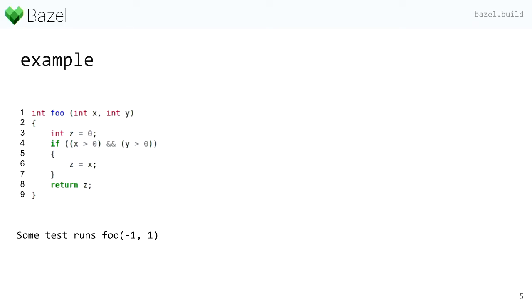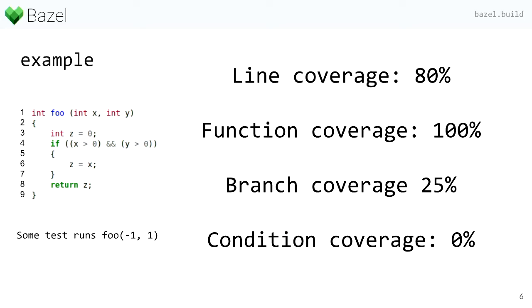If we consider this very simple C++ example, and we assume that somewhere we have a test that runs the method foo with parameters minus 1 and 1, then let's see what coverage will tell us. It tells us that 80% of the lines were covered, all of the methods and functions were executed, only 25% of the branches were taken, but none of the conditions were evaluated to both true and false. So if you look at this information individually, you might draw some conflicting conclusions, because some have very high percentage of coverage while others have it very low. You have to use some or all of this information together to draw more meaningful conclusions about your source code and your tests.